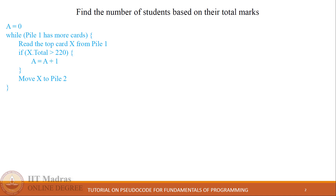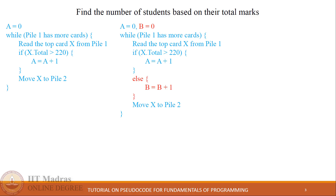We will use the problem statement 'find the number of students based on their total marks' to illustrate different filtering blocks. We iterate over the pile of cards from the scores dataset. If the filtering condition x dot total greater than 220 is true, variable A is incremented. Variable A is initialized to zero because counting always starts from zero. However, we are missing the count of students who have not scored above 220.